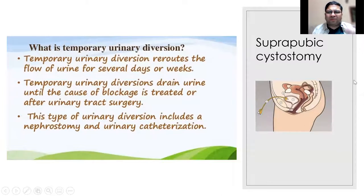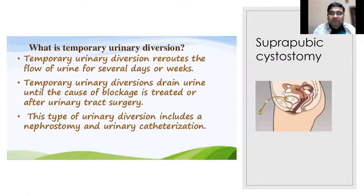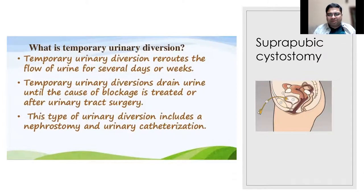In emergency, a patient comes unable to urinate - you try to put in a catheter but it doesn't go because there's a stricture. You put in a suprapubic cystostomy, the easiest form of temporary urinary diversion, then take the patient for urethroplasty later when medically optimized. Bilateral PCNs similarly normalize creatinine as a temporary measure.